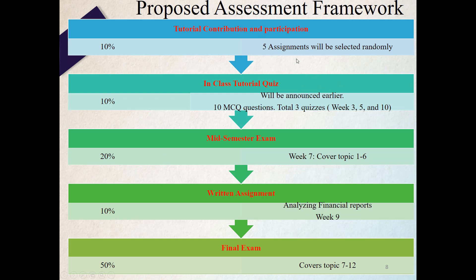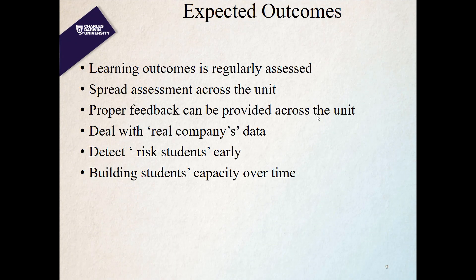From this proposed framework, the timing of assessment is regular — tutorials are given priority with nearly 20% of marks allocated to them. Assessments come in week 3, week 5, then week 7 mid-semester exam, week 9 report submission, and week 10 quiz, followed by the final exam. Each small percentage is assigned regularly so if a student misses one quiz, they don't lose too much, but it creates incentive to keep up. Spread assessment across the unit also allows proper feedback throughout the semester.